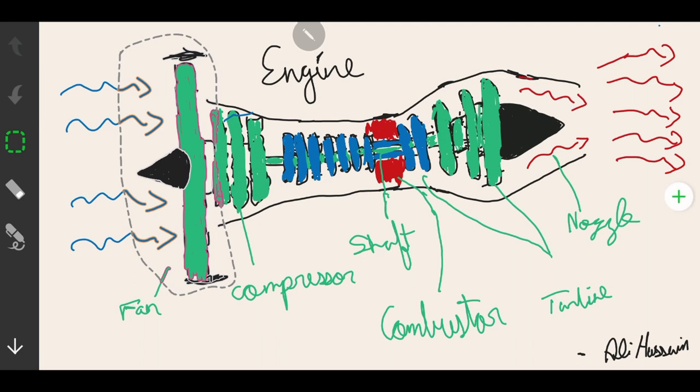The other part goes to the duct which covers the core till the back of the engine, where an enormous force is produced to propel the airplane forward. This air is cool and helps to reduce engine noise along with producing thrust.